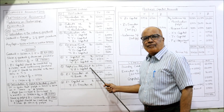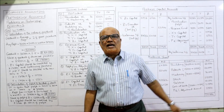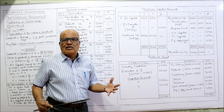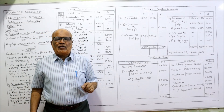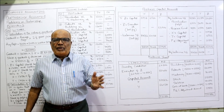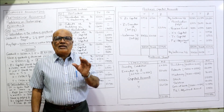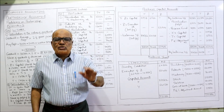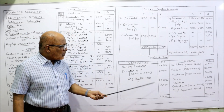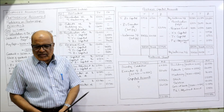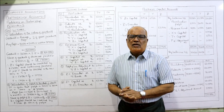The Profit and Loss Adjustment Account has a debit balance, so it is shown on the asset side as a fictitious asset, because we calculate profit at the end of the year. We are making this adjustment on the date of Z's death — mid-year — so it is kept as a debit balance. The total of the balance sheet is 2,21,500. This is the end of problem number 26.